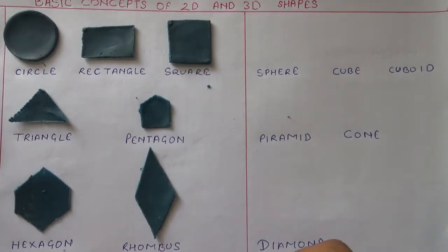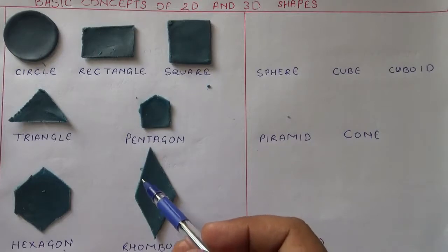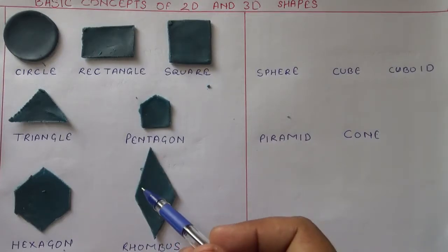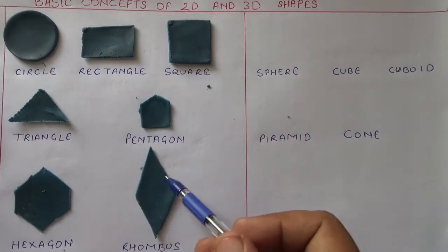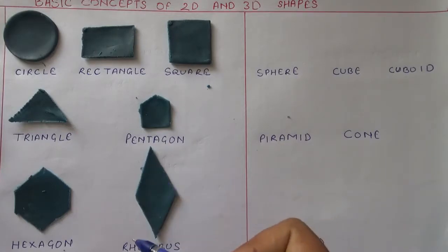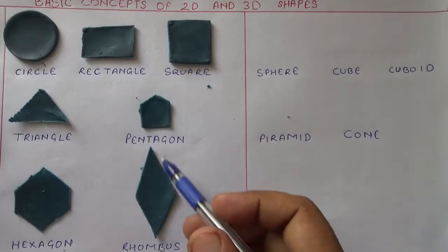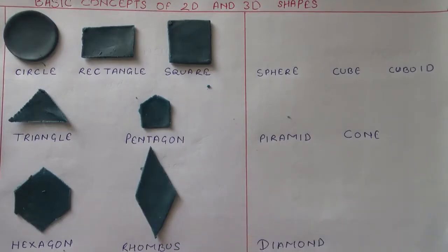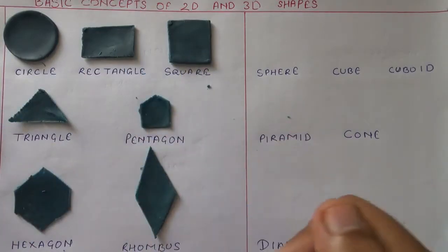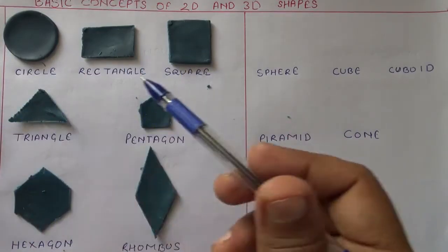Rhombus. A rhombus is a two-dimensional shape where opposite sides are parallel and equal, and opposite angles are equal. These are all two-dimensional shapes.